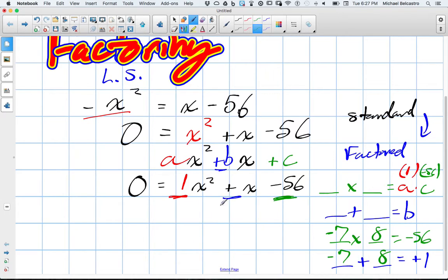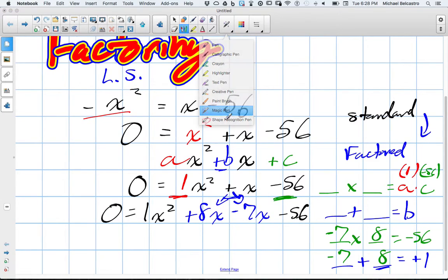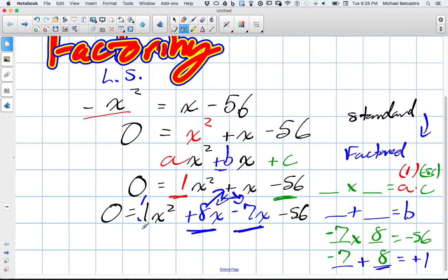Now technically, there's this whole splitting and factoring here. But because our a value is 1, there's kind of a shortcut. I'm going to show you the long way and then the shortcut. So what would normally happen here is we go: zero is equal to 1x squared. And this is called decomposition. We decompose. We have plus 8x, so that's one of these terms, and then minus 7x. And we still bring out the negative 56.